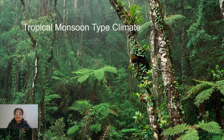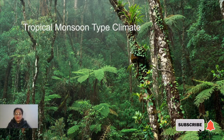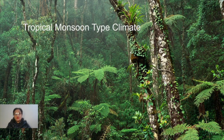Today's topic is one more natural region of the world: the tropical monsoon type climate. In this climate, two terms are mentioned. 'Tropical' refers to any region that lies between the two tropics or very close to them. 'Monsoon' is important because in this climate, the monsoon winds play a very important role.